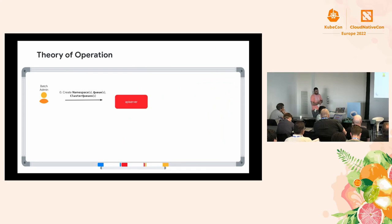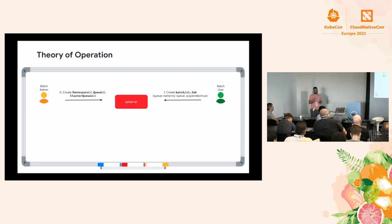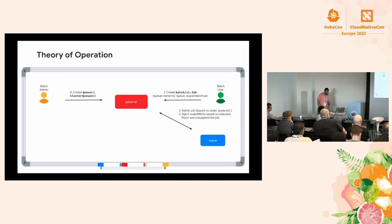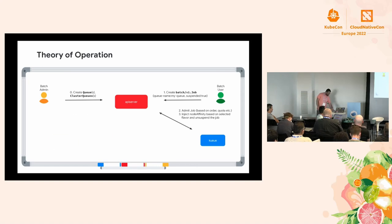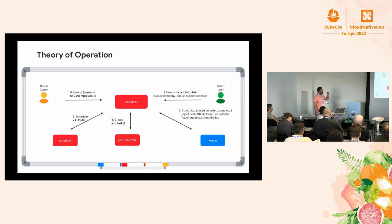Here's how it all works. The batch admin creates namespaces, queues, and cluster queues. The user creates a job and assigns it to a queue. We force the job to start in suspended mode — no pods are created initially — using a suspend flag now available in the Job API, enforced via a webhook. Our queuing controller watches for these suspended jobs. Based on the ClusterQueue, available flavors, available quota, and ordering, it will admit the job — assigning a specific flavor, giving it quota, injecting affinity into the job, and unsuspending it. That's basically all it does. It doesn't create pods or do anything an existing controller already handles. Once unsuspended, the job controller creates the pods and the scheduler assigns them to nodes.